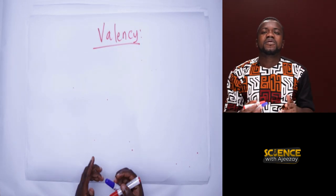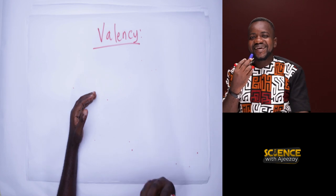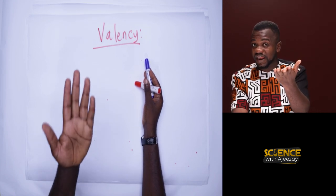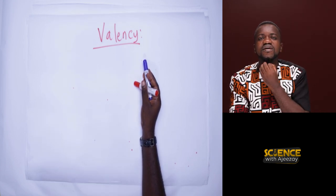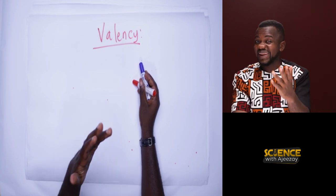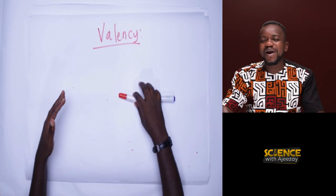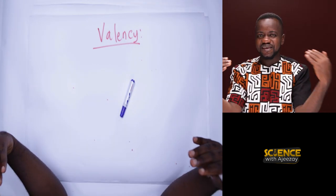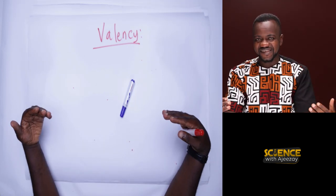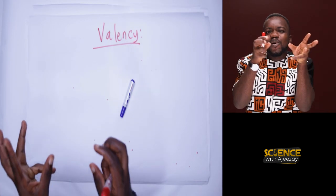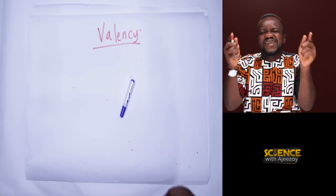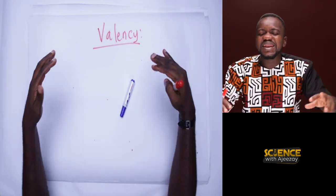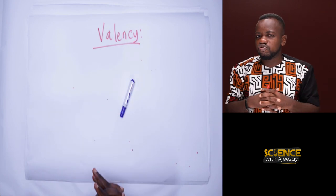Valency. Now, since we have actually had the ions, we can actually explain what valency is. Valency is the combining power of an element. Once elements are about to form compounds, there is a point where they exchange their charges. Once they exchange their charges, each atom or each ion or each element has got a charge. Once they exchange, they come together as a bond, and the combining power of each element is called valency.